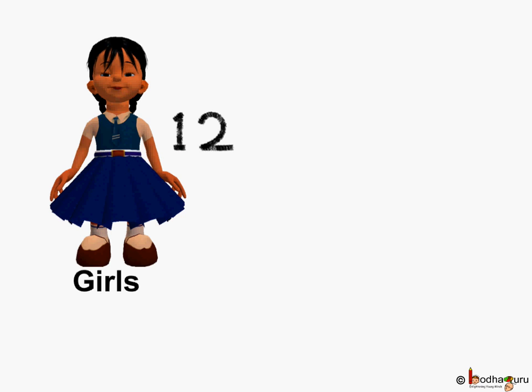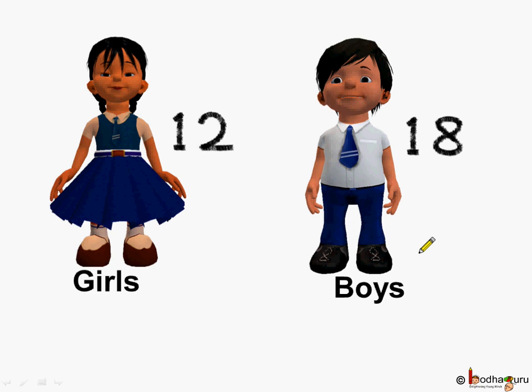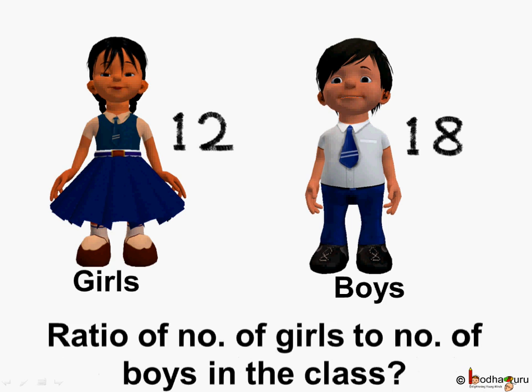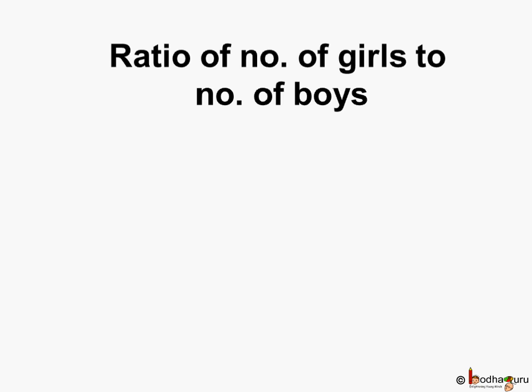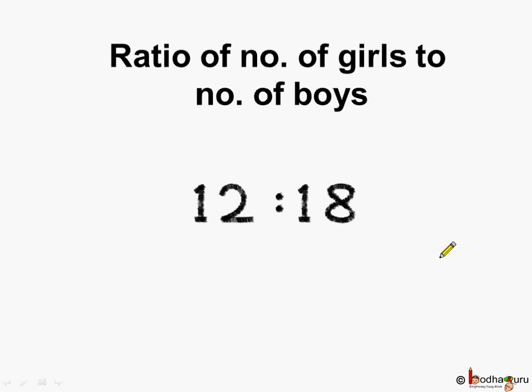Now let's see another scenario. In a class there are 12 girls and 18 boys. What is the ratio of number of girls to the number of boys in the class? The ratio of number of girls to the number of boys is equal to 12 is to 18.